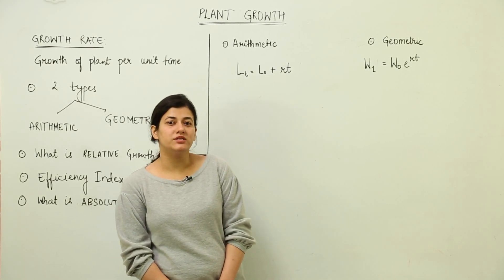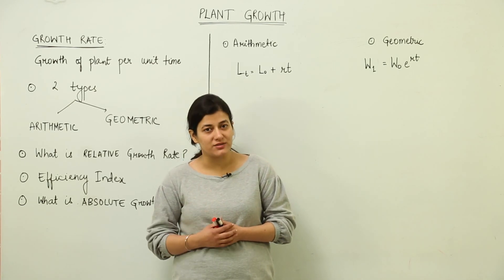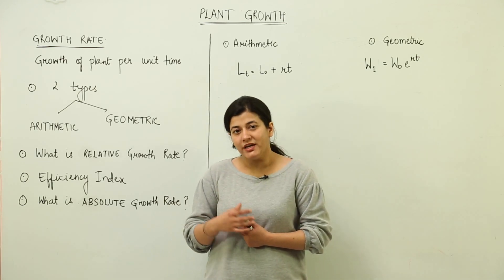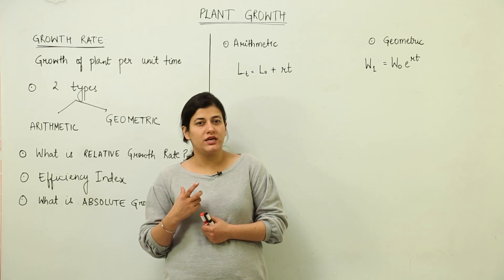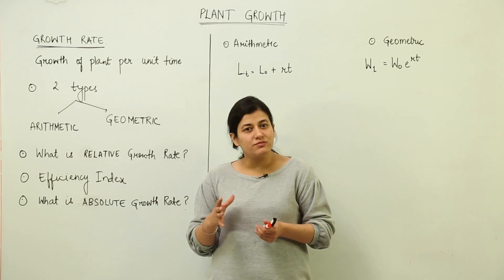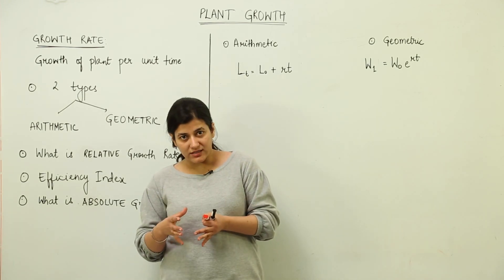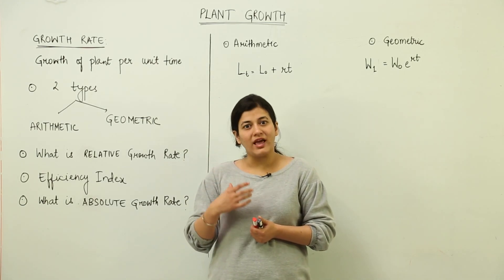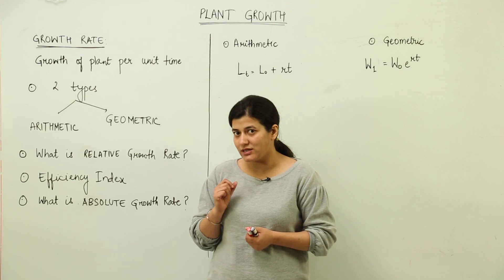We are going to discuss growth rates. Plant shows growth, and growth is a consequence of protoplasmic increase — the protoplasm increases as a result of meristematic division. That growth can be measured in various ways. For example, growth of a pollen tube is measured in terms of length, while protoplastic growth is measured in terms of number of cells. Measurable growth can be represented in the form of growth rate.